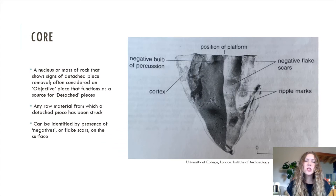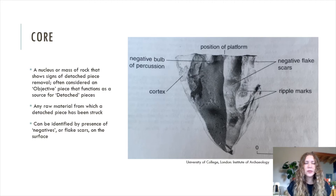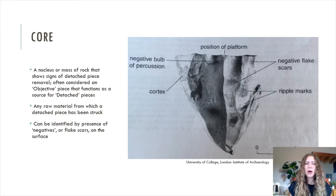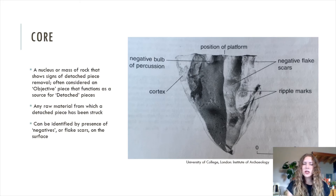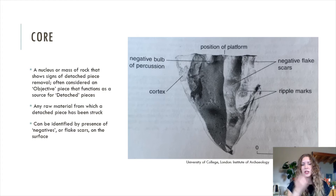Moving on from hammers, we have cores, which are the primary type of objective piece. The definition of a core is a nucleus or massive rock that shows signs of detached piece removal, often considered an objective piece that functions as a source of detached pieces. A core is basically any raw material from which a detached piece has been struck, and it can be identified archaeologically by the presence of negatives or flake scars on the surface. You can see in this diagram — an actual photograph of a flake labeled with its different components: position of platform, negative bulb of percussion, cortex, ripple marks, and negative flake scars.